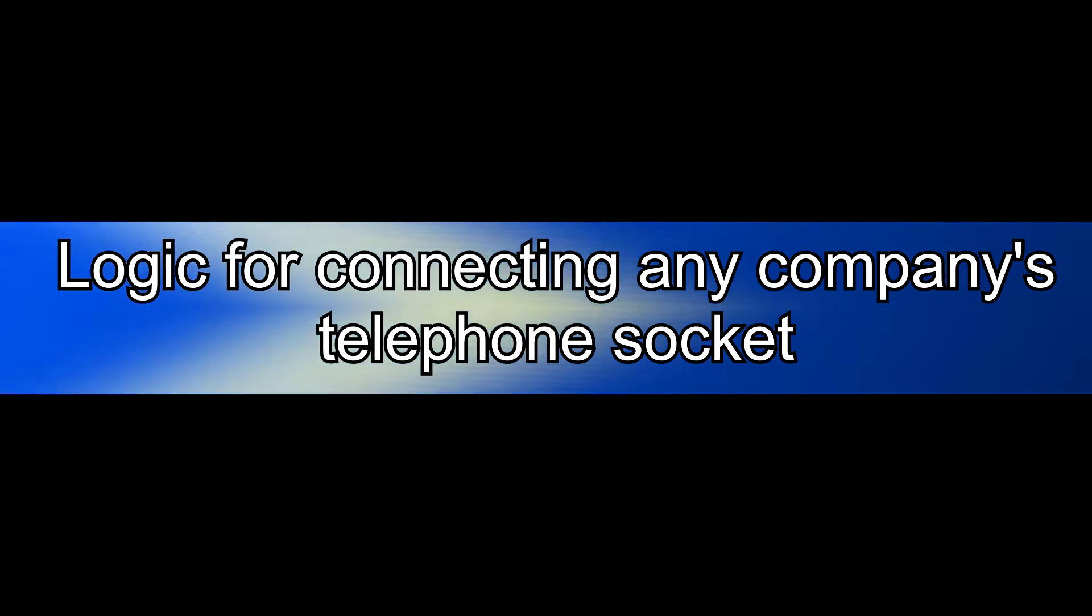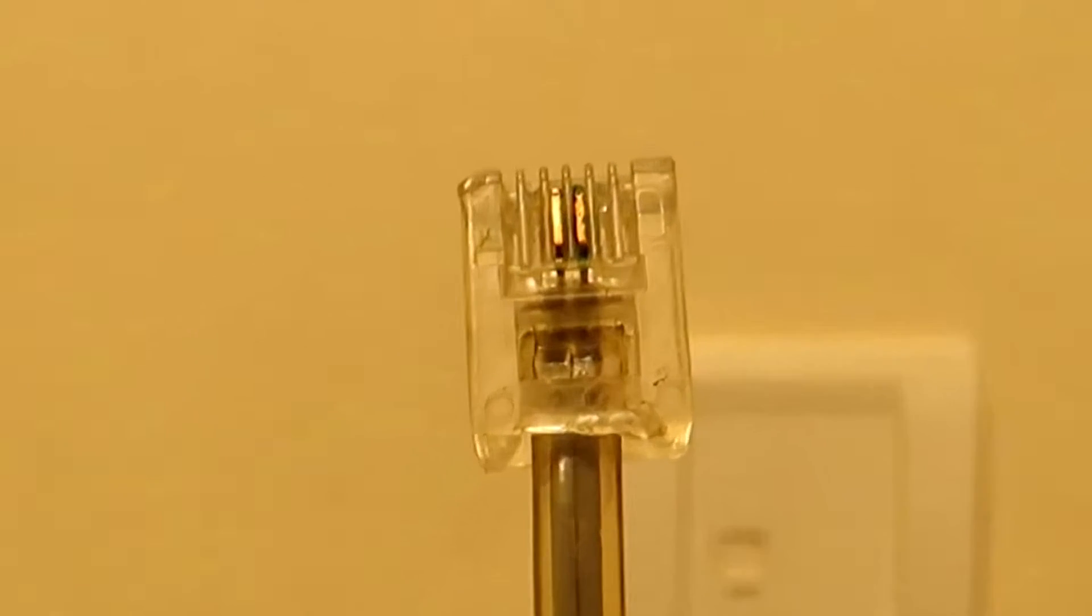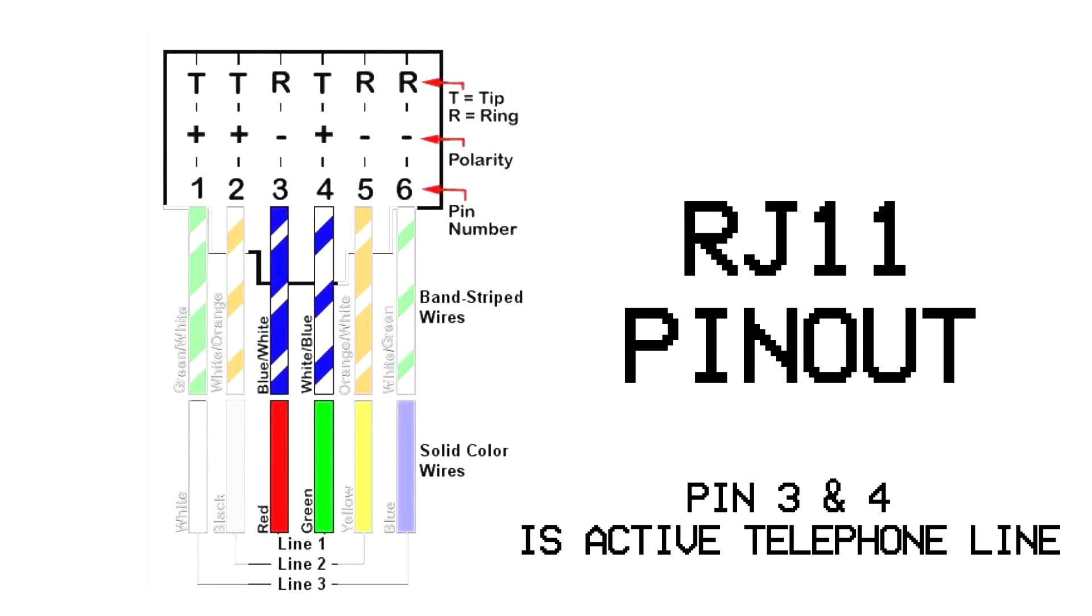Now coming to the basic logic and industry standard color codes using which you will be able to connect any sort of wiring to any company's telephone socket. Basically, you should know that the center two pins in the RJ11 socket is what your telephone uses. From industry standards, it is known that pin number three is labeled as red and pin number four is labeled as green.